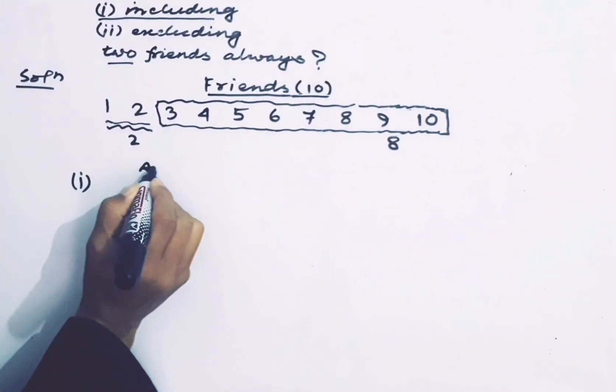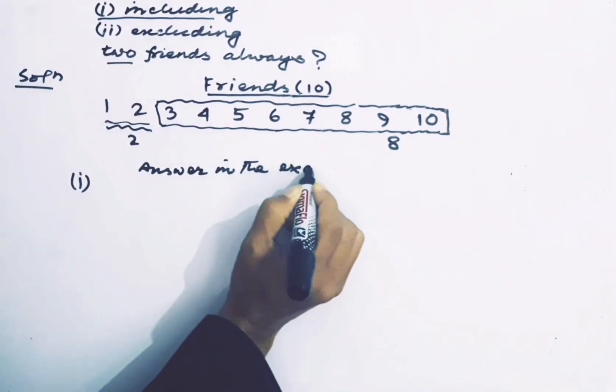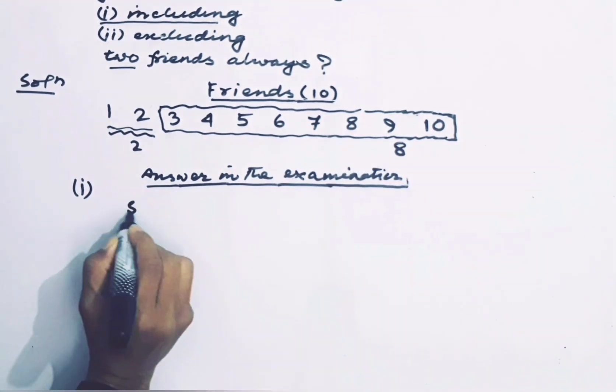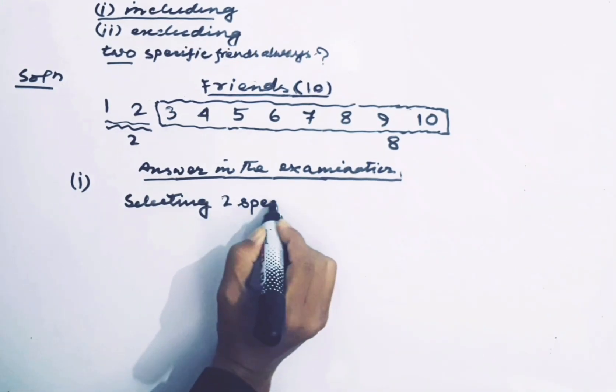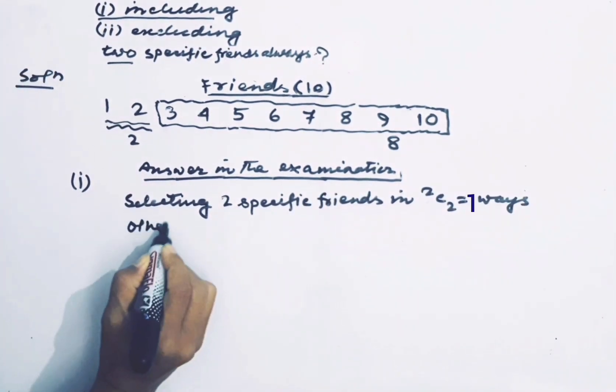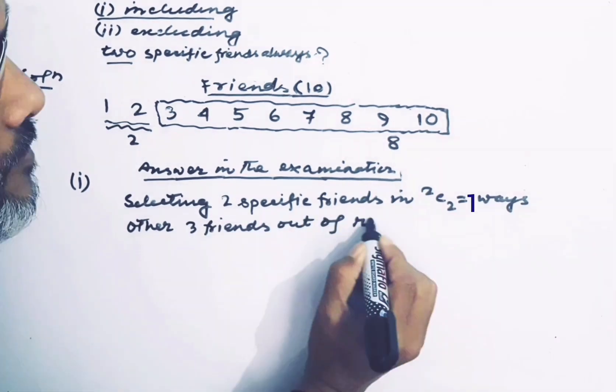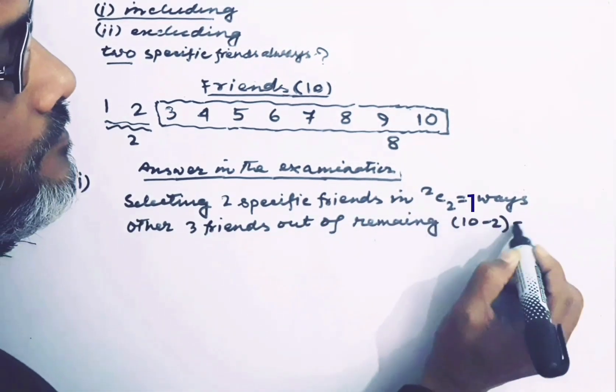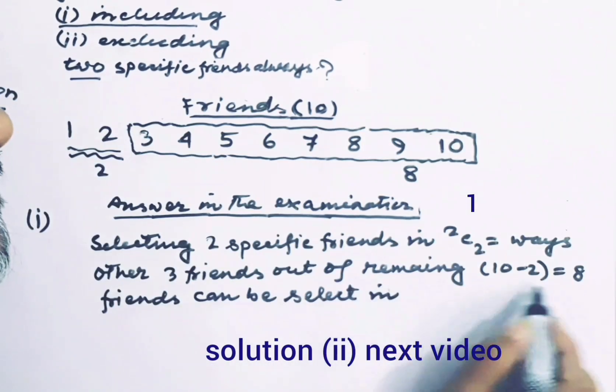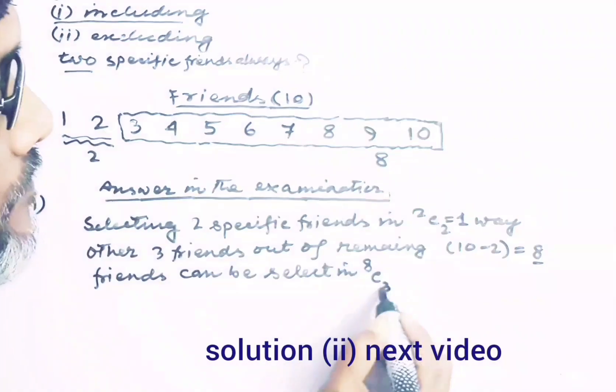We can solve the problem in another way. Selecting 2 specific friends in 2C2 equals 1 way. The other 3 friends out of the remaining 8 friends can be selected in 8C3 ways.